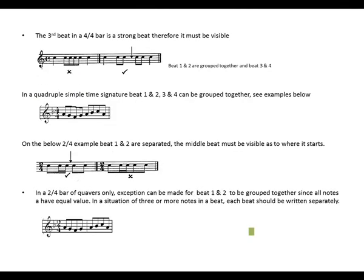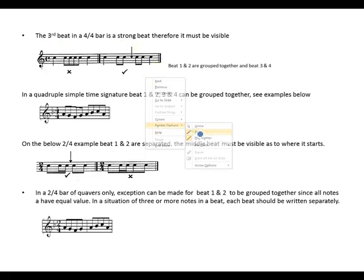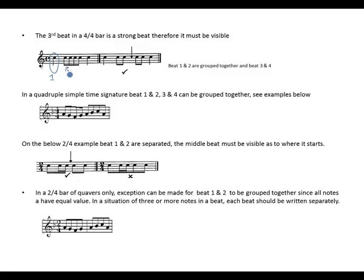Now let's look at examples of improving groupings. The third beat in a 4/4 bar is a strong beat, therefore it must be visible. The first example shows an incorrect grouping — the crochet is beat 1, then beat 2 is grouped with beat 3, then a crochet on beat 4. We can't place an imaginary barline between beat 2 and 3 because these beats have been grouped together.